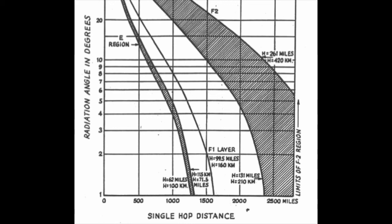When looking at antenna patterns to figure out what an antenna is good for, you have to think about where its maximum radiation is, how much that radiation falls off at other angles, how high the ionosphere is, and whether you're talking about F-layer or E-region communication. There are a whole lot of factors to consider when deciding which antenna to use or how to design your antenna.